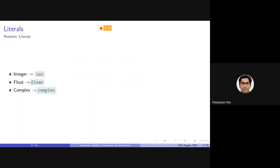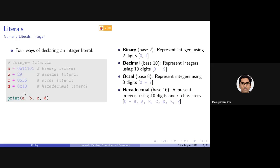There are three types of numeric literals: integer, float, and complex. We have already encountered integer literals in our programs. For example, declaring variable b = 29 stores the integer literal 29 in variable b.